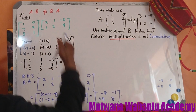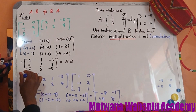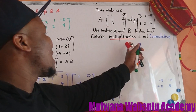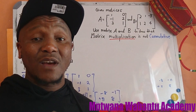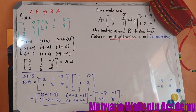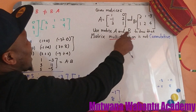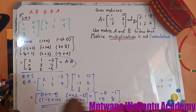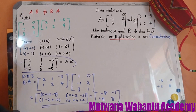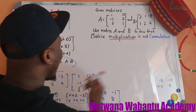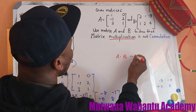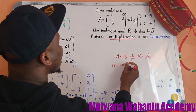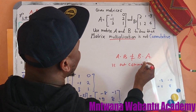If you look at the left-hand side and the right-hand side, they're not equal. This is the left-hand side and this is the right-hand side. Since they're not equal, then it's not commutative. So we have shown A times B is not equal to B times A, so matrix multiplication is not commutative.